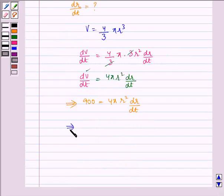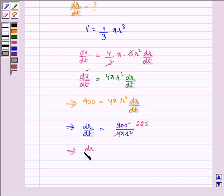This implies dR by dt equals 900 by 4 pi R square. 900 gets cancelled by 4 and we get 225, so it implies dR by dt equals 225 by pi R square.